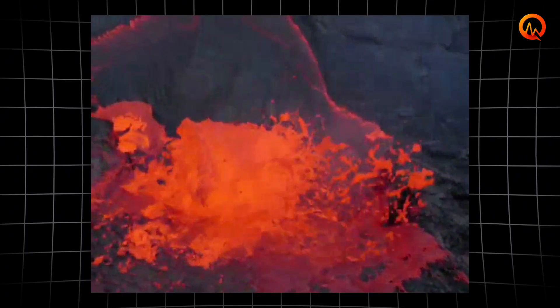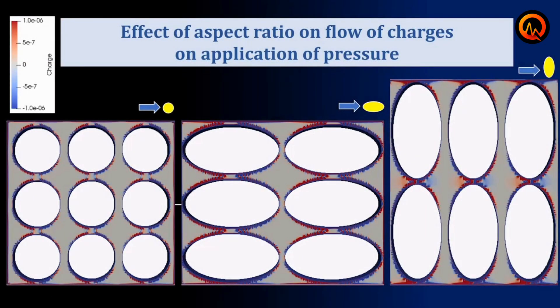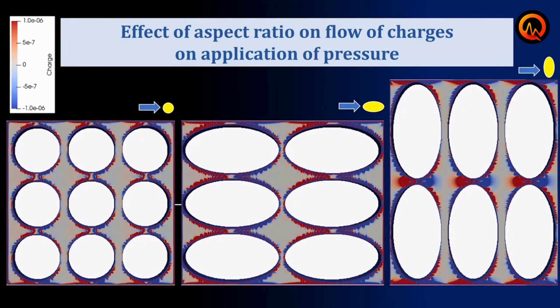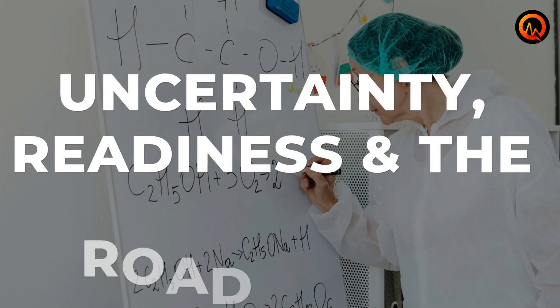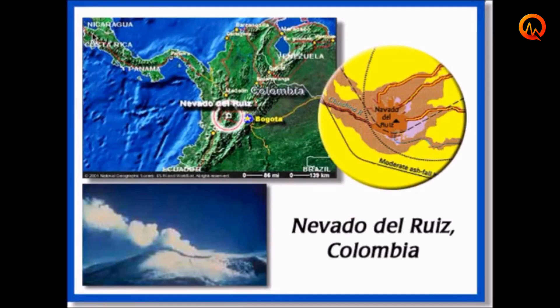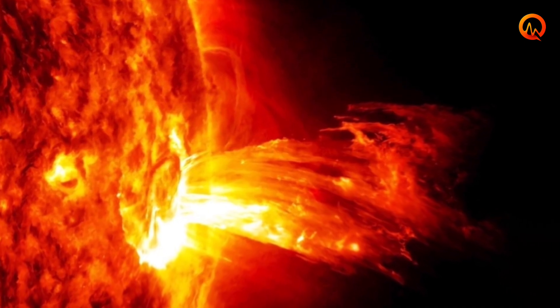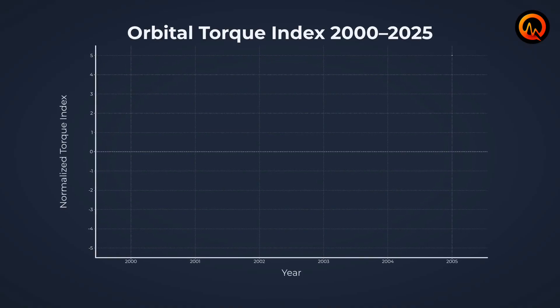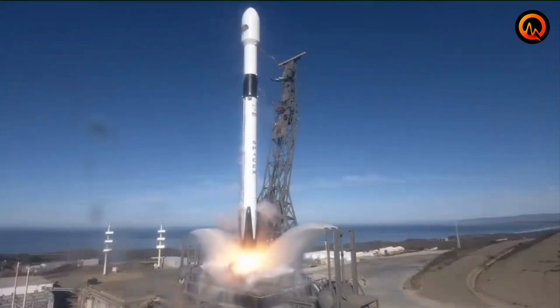While these experiments cannot replicate the full complexity of natural magma chambers, they demonstrate that electromagnetic fields do influence rock behavior under pressure. However, distinguishing correlation from causation remains challenging. Solar activity follows roughly 11-year cycles, and volcanic activity also shows cyclical patterns over similar timescales. Determining whether solar activity directly triggers volcanic eruptions, or whether both phenomena respond to deeper planetary cycles, requires more extensive data collection.